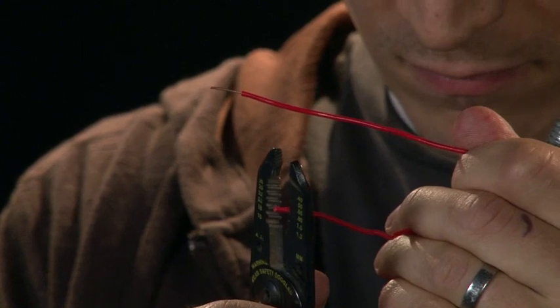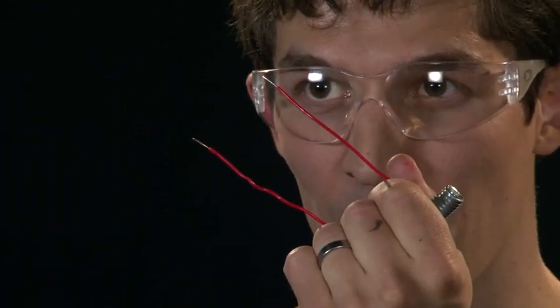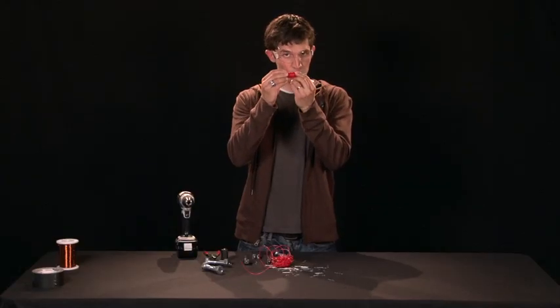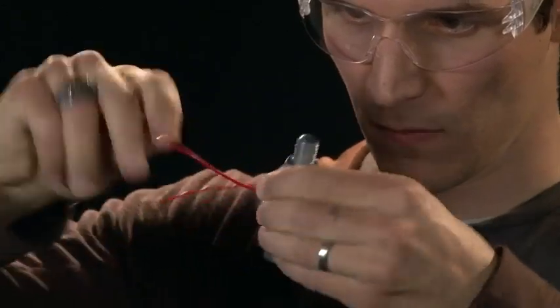You'll also need to remove the insulation from the ends of the wire. You can see the copper sticking out from inside of the plastic. I'm also going to twist my wires together so that they don't come unwrapped.